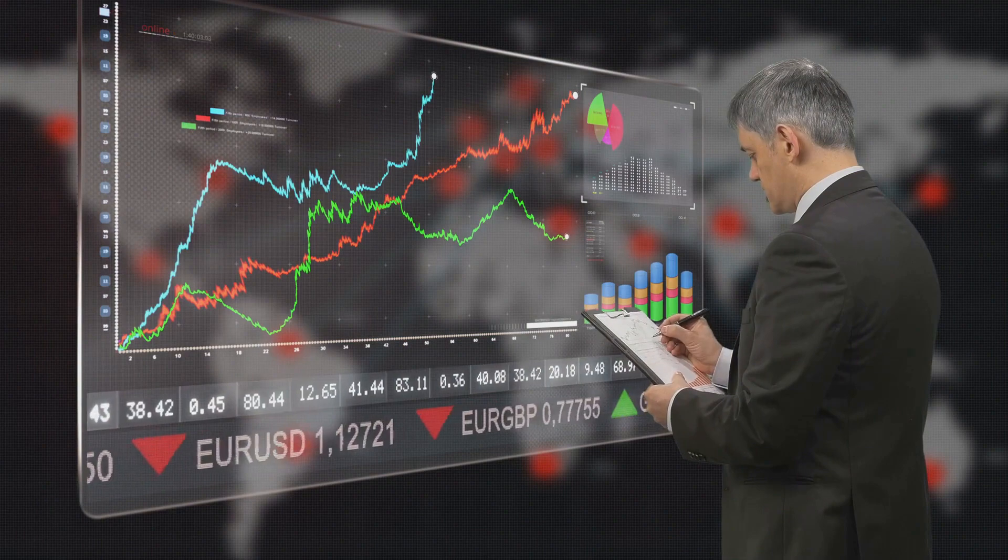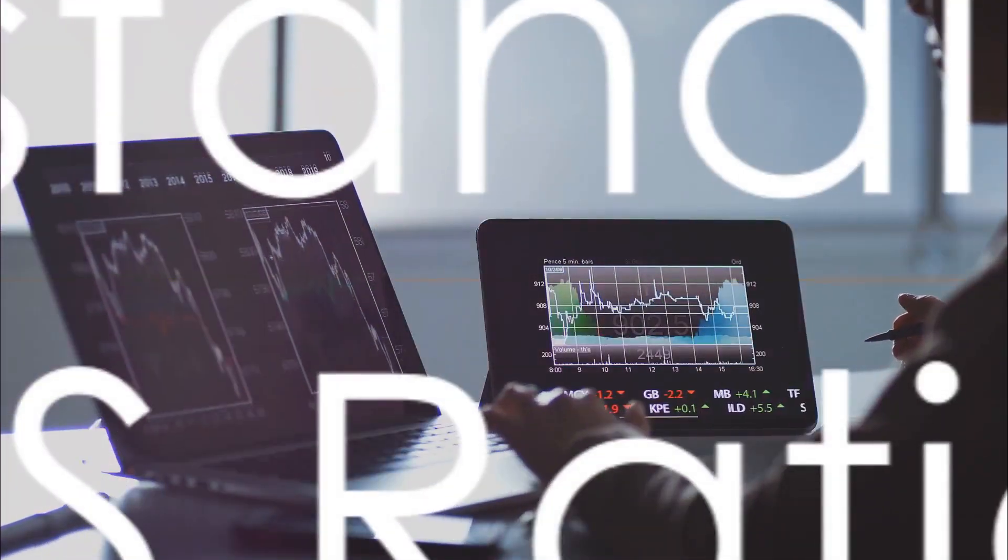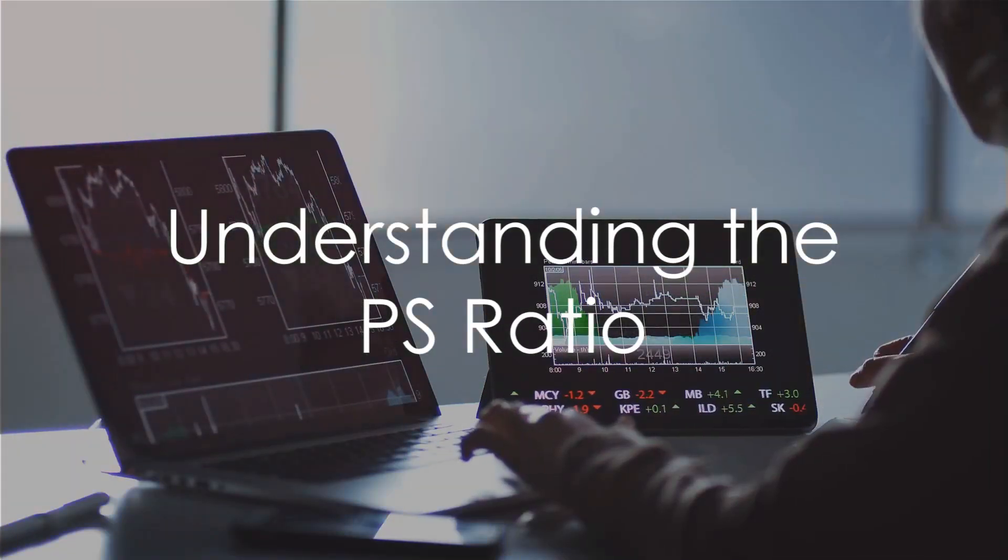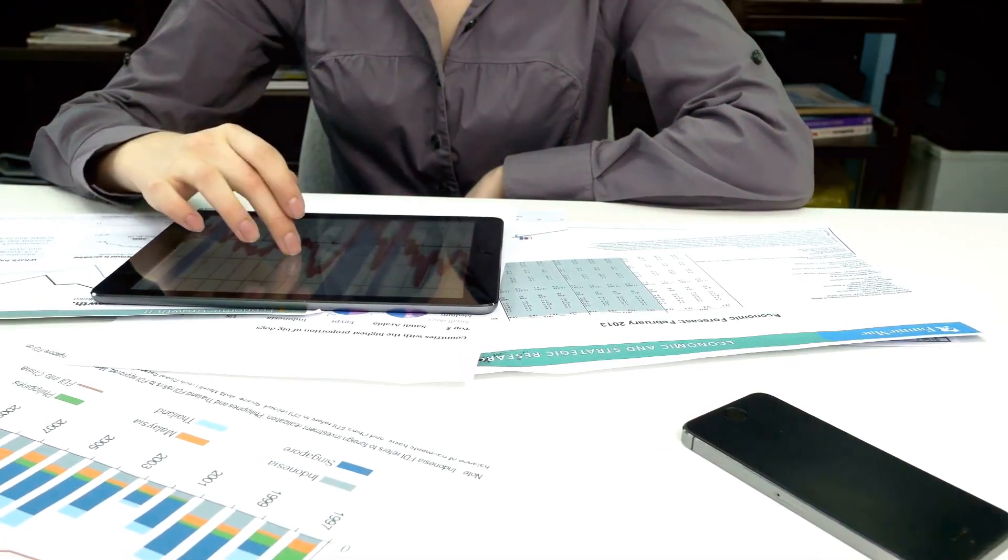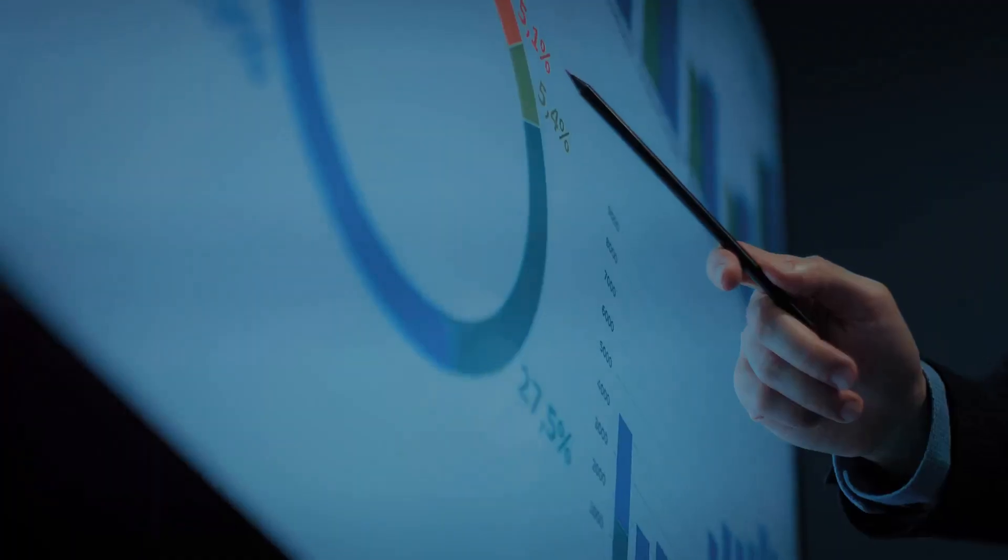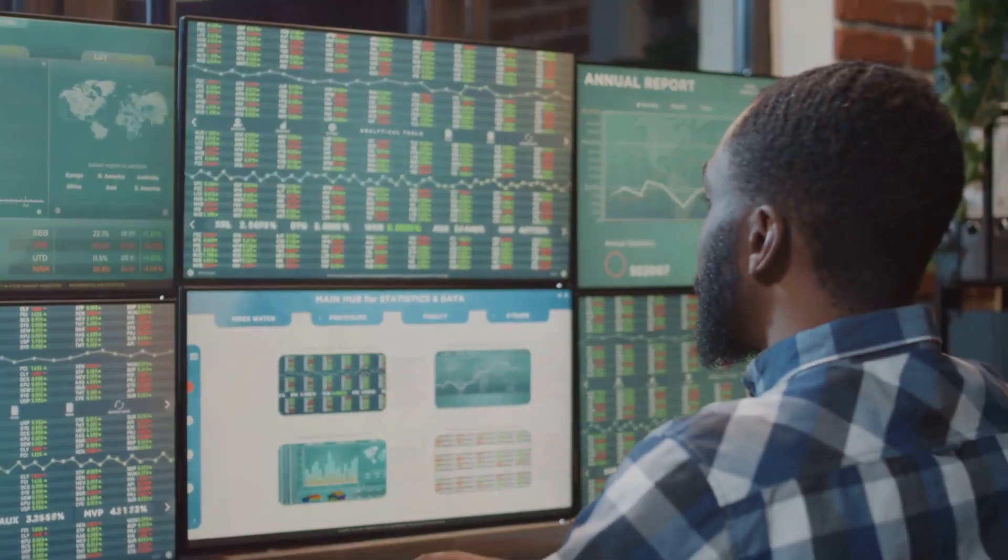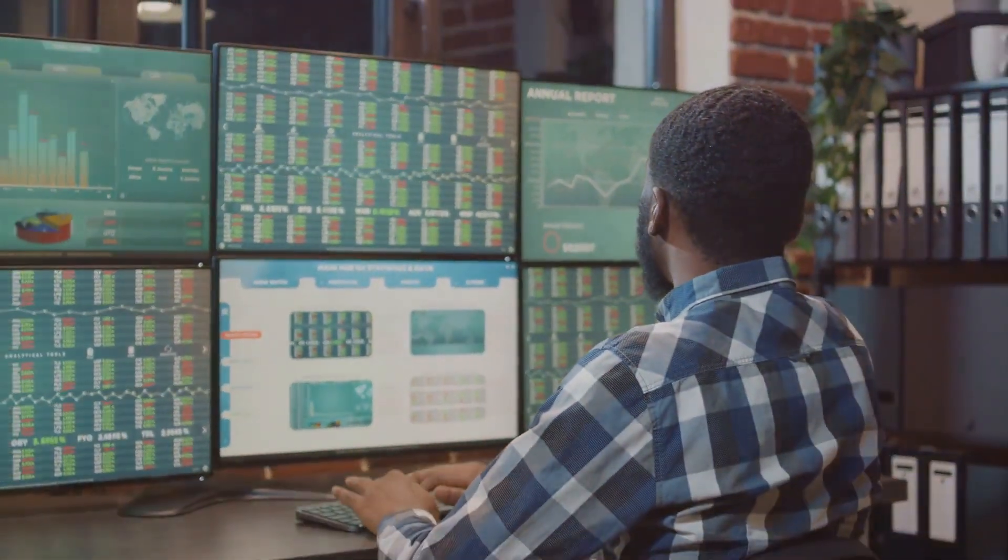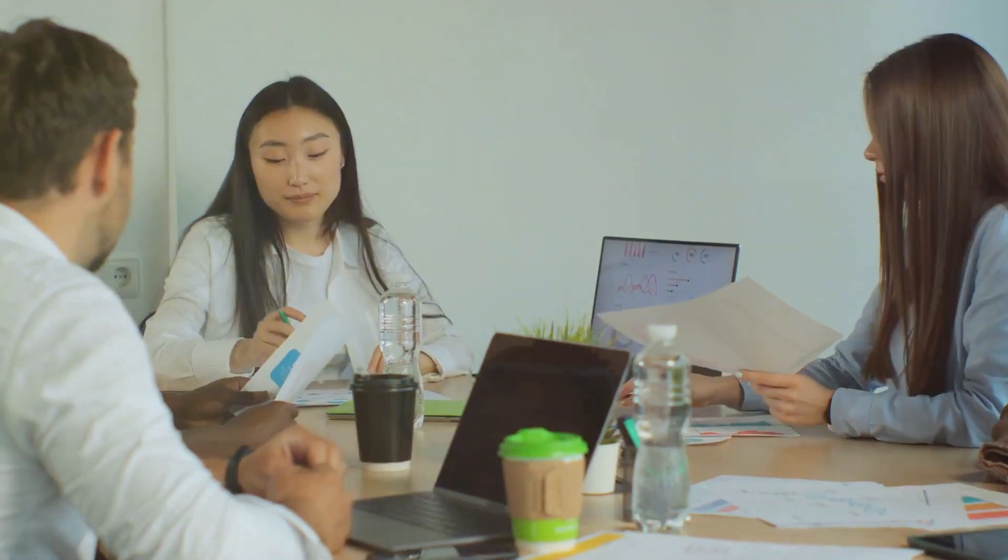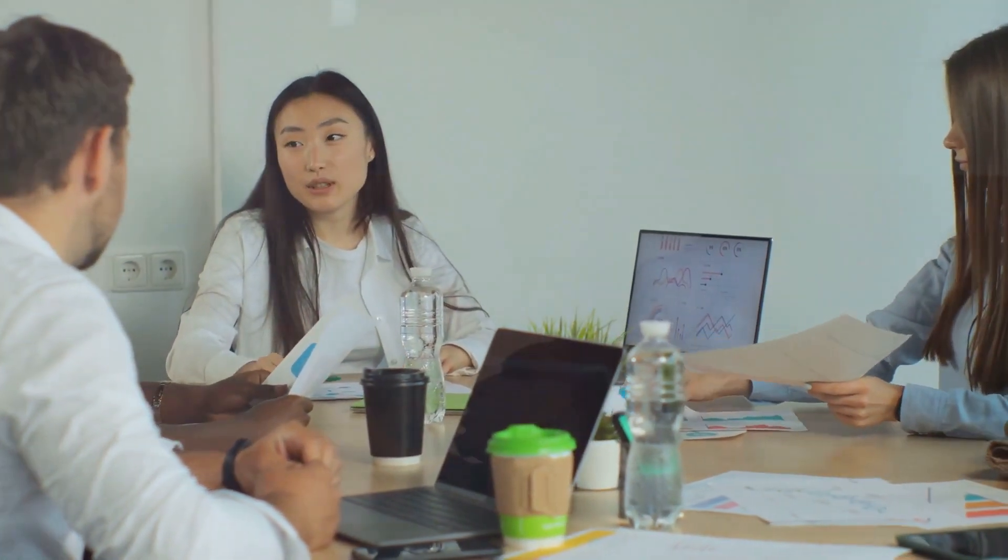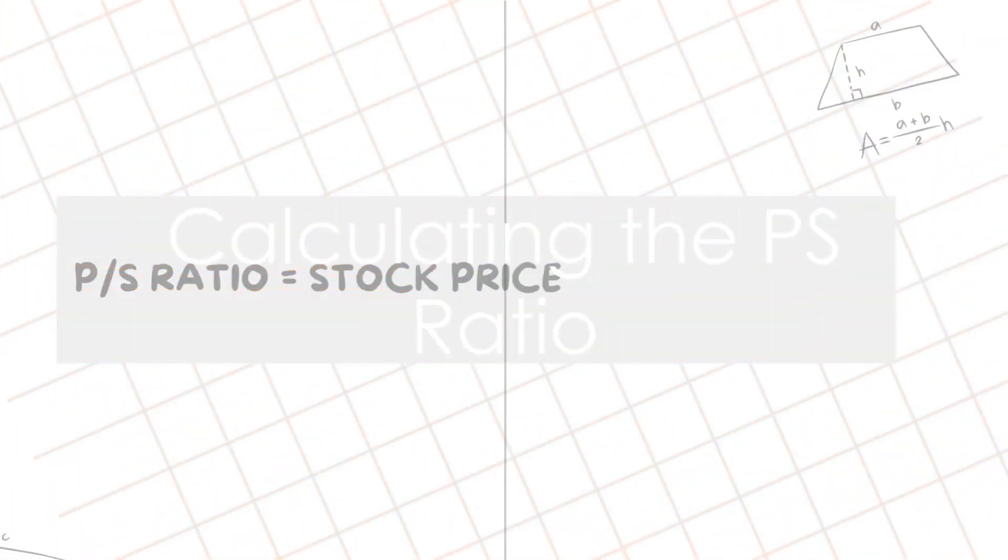The price-to-sales ratio, or P/S ratio, is a valuable tool for investors. It's a simple yet powerful way to assess the valuation of a company. But what exactly is it? The P/S ratio measures the relationship between a company's stock price and its total revenue or sales. In essence, it tells us how much investors are willing to pay for every dollar of a company's sales.